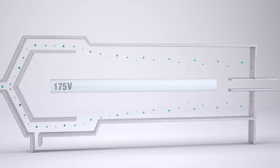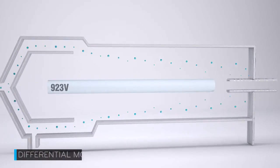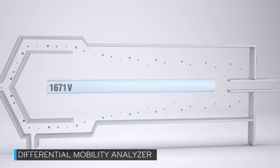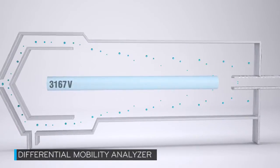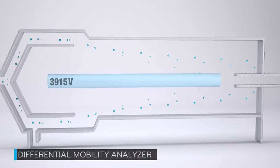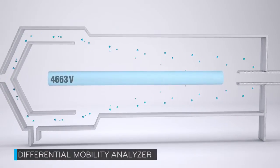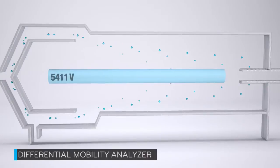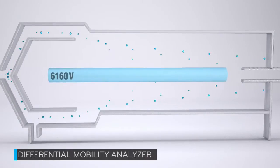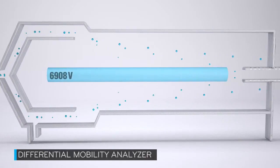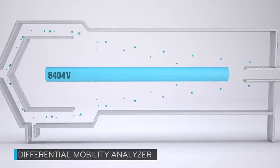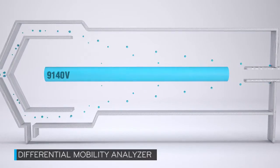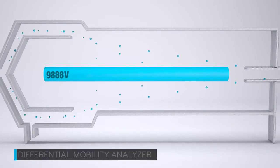From here, the particles flow into a differential mobility analyzer, which consists of a center rod and a grounded outer tube. Varying high voltage is applied to the center rod, creating an electrical field. As the particles travel the length of the tube, different sized particles are drawn to the center rod at different rates based on their diameter and charge state. For any given voltage, only one size of particle will reach the slit in the end of the rod, creating a band pass filter.